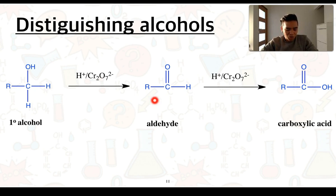So going from a primary alcohol to an aldehyde, we can see that this compound has actually gained an additional bond with an oxygen as well as it's lost two hydrogens to form our aldehyde.